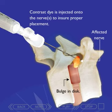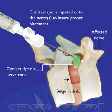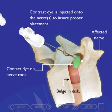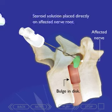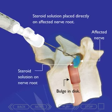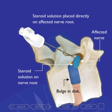Once the epidural needle is in place, a small amount of contrast dye is injected onto the nerve to ensure proper placement. The contrast dye helps the doctor see the nerve root in the fluoroscope. A steroid solution is then injected and the needle removed from the patient's back. The steroid solution soothes the affected root and helps reduce inflammation and swelling in the disc bulge.